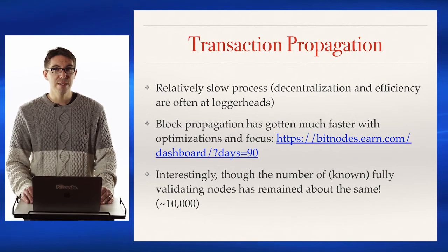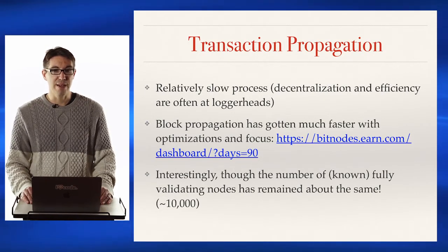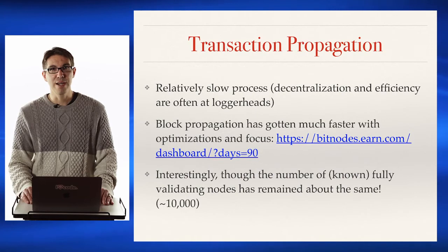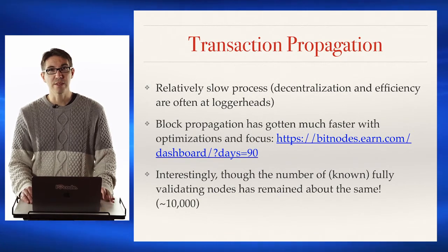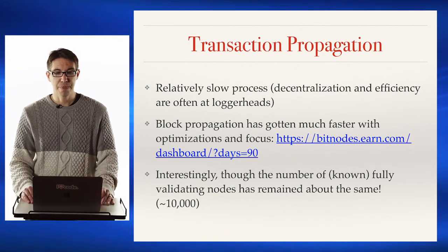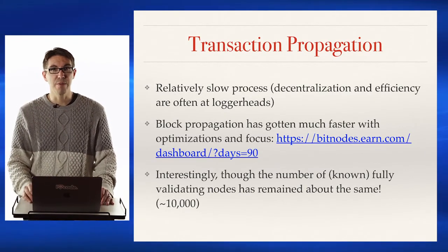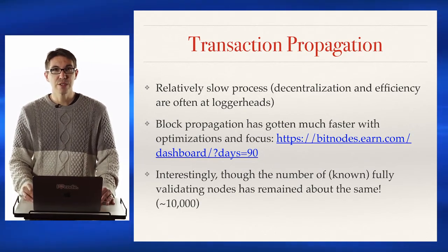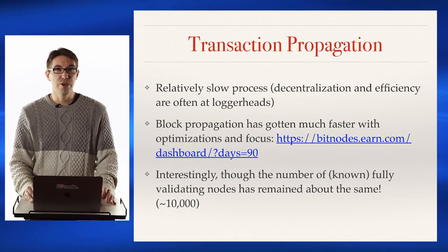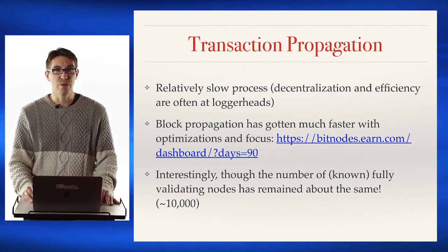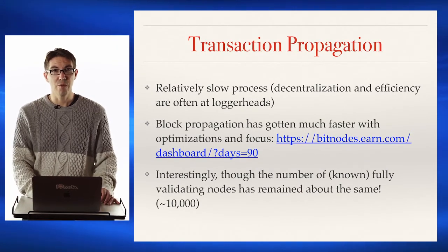Block propagation has actually gotten much faster with recent optimizations. Most transactions will reach the vast majority of nodes in the Bitcoin network within a few seconds, as long as you have a good internet connection. Interestingly, the size of the Bitcoin network in terms of full nodes has been relatively stable over the last few years, so the number of nodes that need to be propagated to is actually relatively small. Not every node connected to the Bitcoin network is a full node, so let's talk about some of those other kinds of nodes.